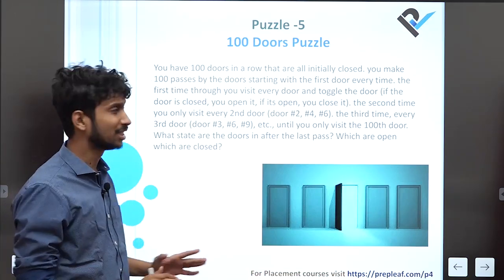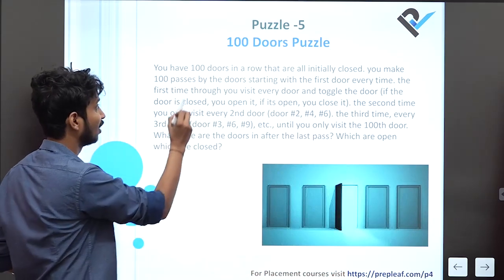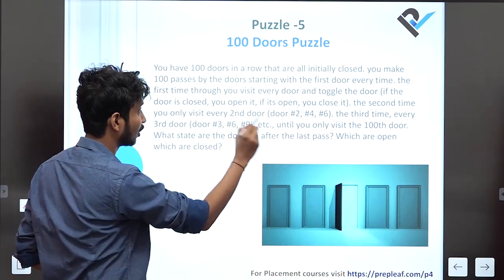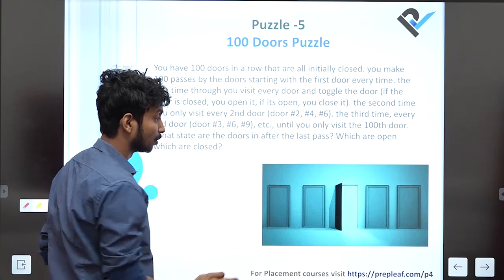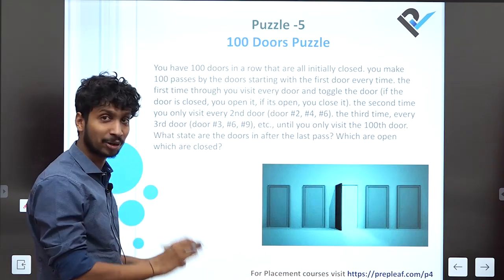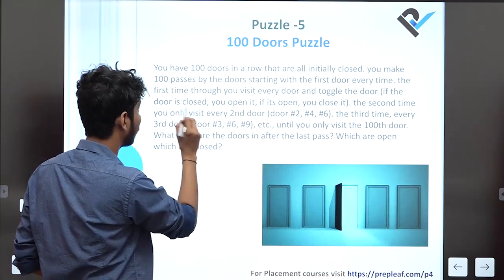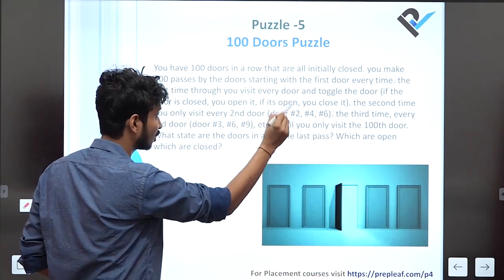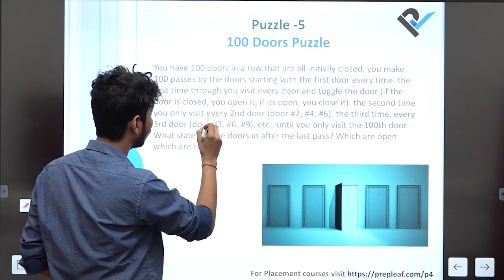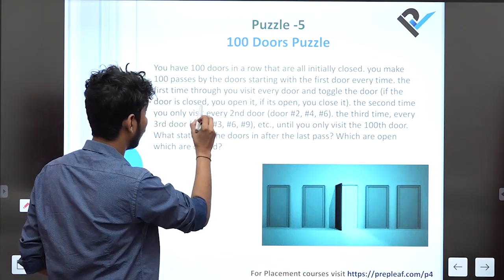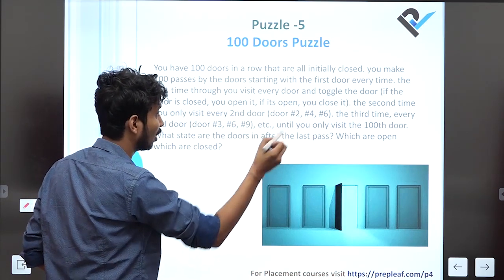This is not a tough problem, this is a very simple problem. There are 100 doors in a row that are all initially closed. You make 100 passes by the doors, starting with the first door every time. On the first pass, you visit every door and toggle the door.